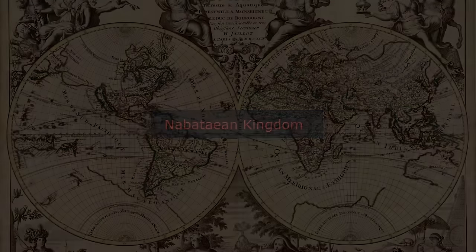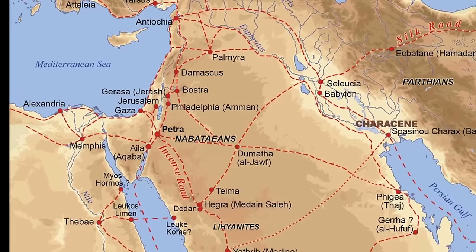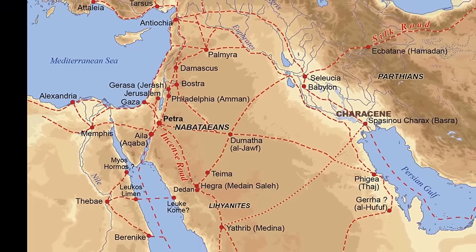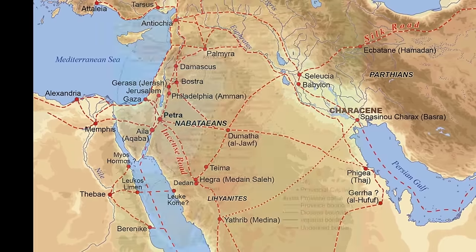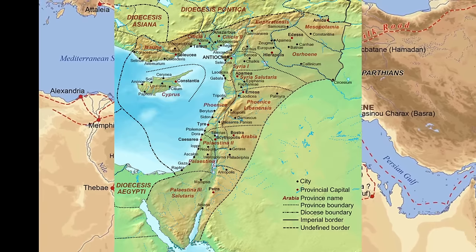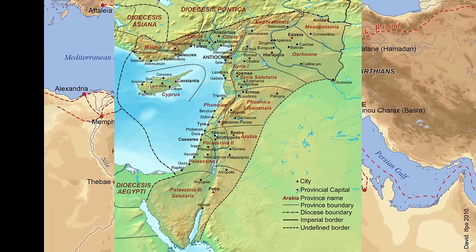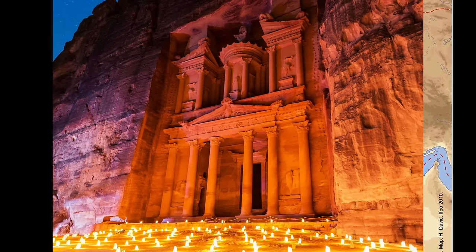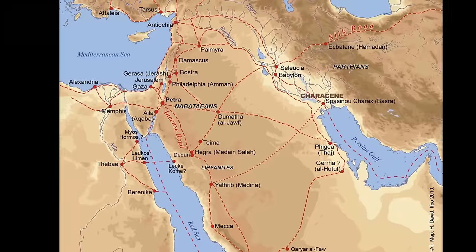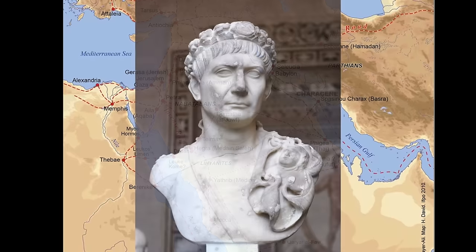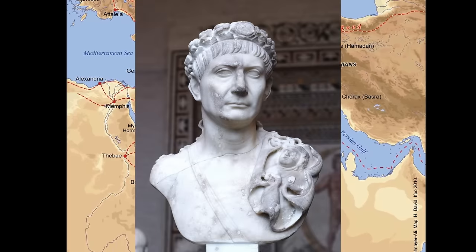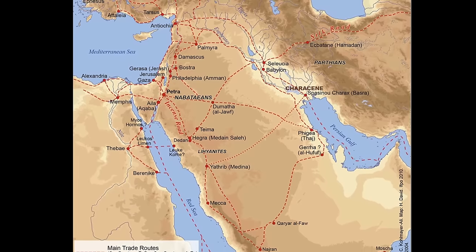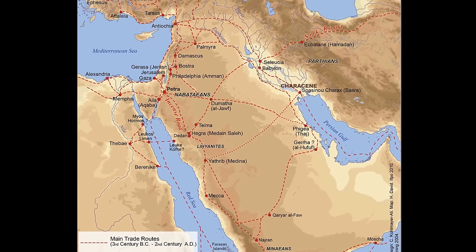The Nabataean Kingdom was an ancient Arabian kingdom from the 4th century BC to the 2nd century AD. The kingdom emerged in the south of modern-day Jordan, northwest of Saudi Arabia, and southern Israel, and spread from there. The capital city, with its impressive rock-cut structures, was Petra — a major trading hub for the region that helped the kingdom grow rich. Under Roman Emperor Trajan, the kingdom fell under Roman rule and became the province of Arabia Petraea. The empire's work still attracts visitors and tourists today and reminds people of the rich kingdom that was once there.